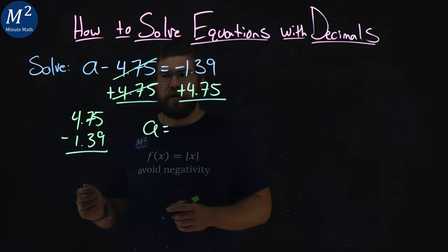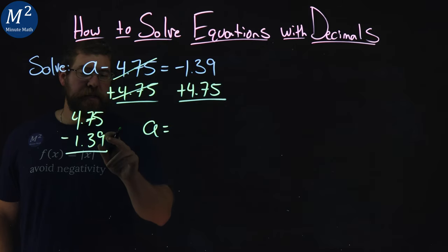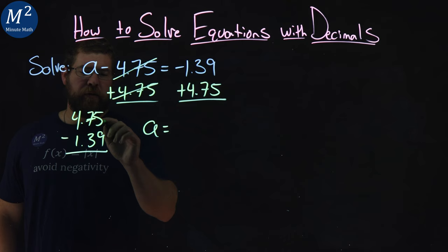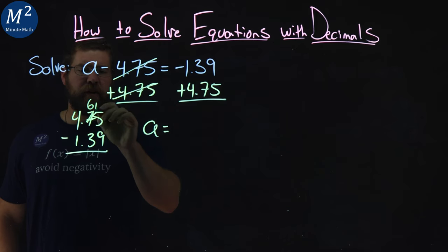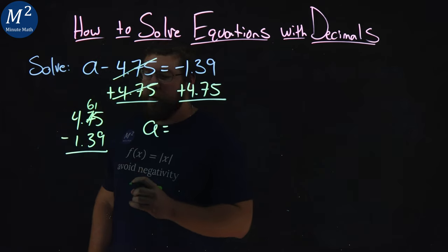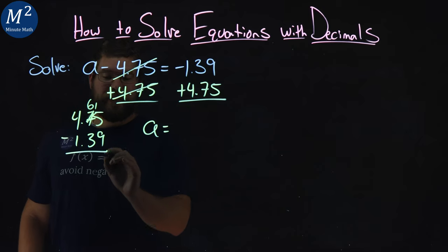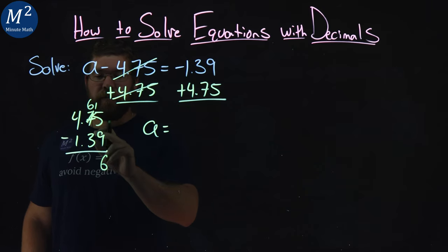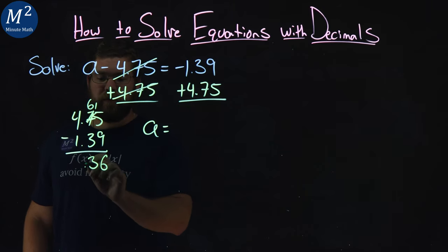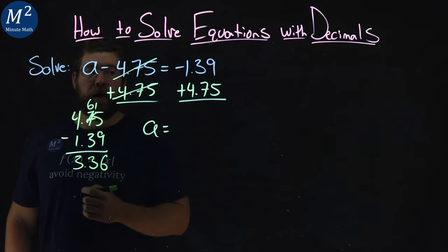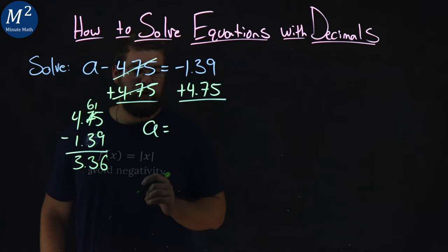Now, that's a little easier to solve. 5 minus 9, well, can't do that. Let's borrow from the 7, becomes a 6, carry the 1. Now, 15 minus 9 is 6. 6 minus 3 is 3. And, 4 minus 1 is 3 as well. And, it's a positive 3.36.